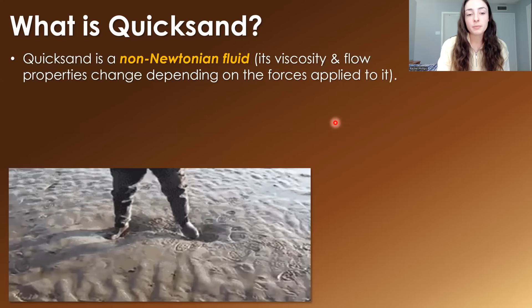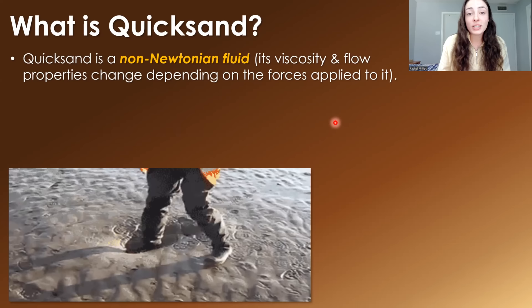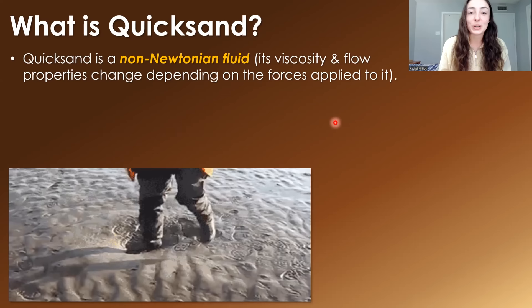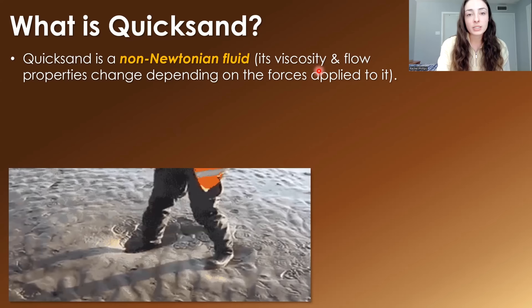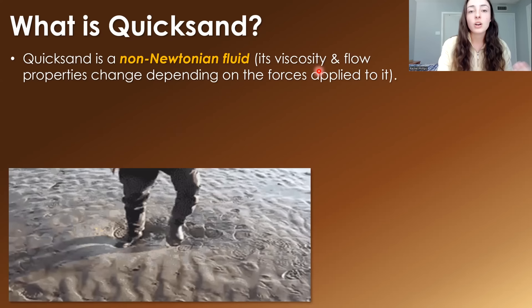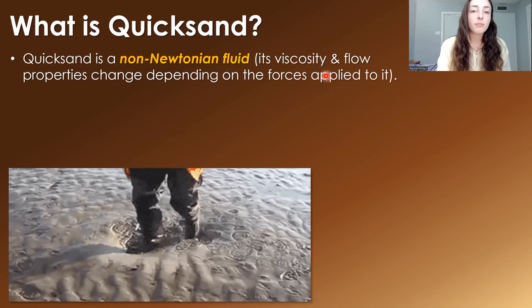What I found really interesting is that quicksand actually behaves as a liquid under certain conditions, typically when it's being moved around or stepped on, as shown in this clip here. This makes it what's called a non-Newtonian fluid, which means its viscosity and flow properties change depending on the forces applied to it. Viscosity is just resistance to flow — honey is really viscous, water is not. These properties change when it's disturbed, making it difficult for anything trapped to escape.